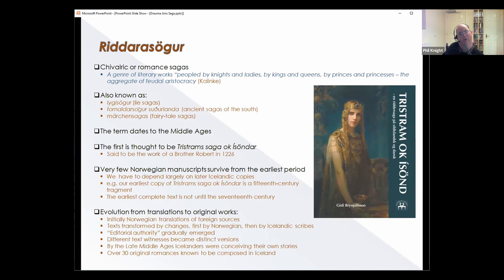Draumr Jóns saga has traditionally been included in the genre of Old Norse literature known as riddarasögur, the so-called chivalric or romance sagas, also variously known as lygisögur or lie sagas, fornaldarsögur suðrlanda, ancient sagas of the south, and mærasögur or fairy tale sagas. The term riddarasögur, to describe a form of literature told as nightly adventures, dates to the Middle Ages. Marian Kalinke describes them as a genre of literary works peopled by knights and ladies, by kings and queens, by princes and princesses, the aggregate of feudal aristocracy.